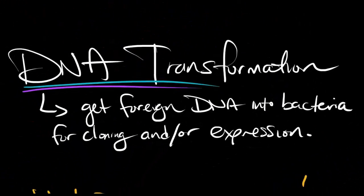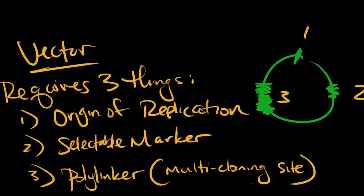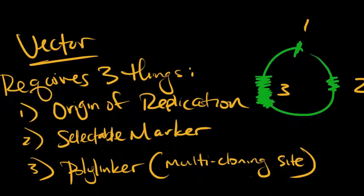Now, on to the big topic of DNA transformation. The goal of DNA transformation is to get a foreign gene into bacteria, which can then be copied and expressed. For this purpose to work successfully, three things are needed in the vector, which is the name of the plasmid that we want the bacteria to take up.